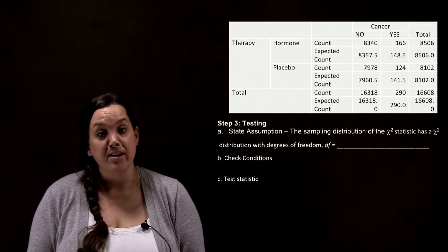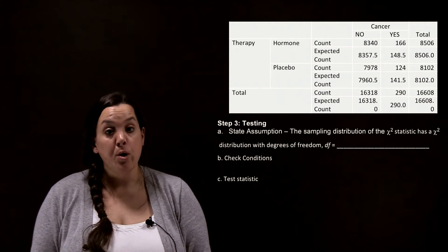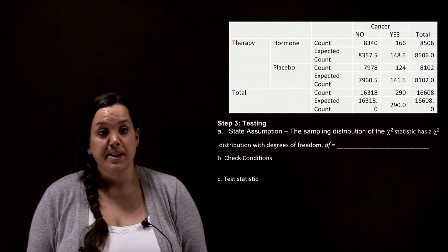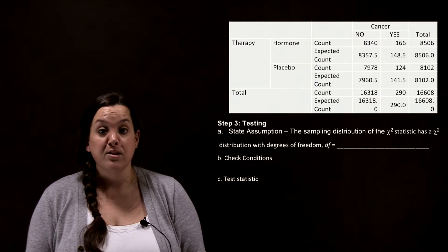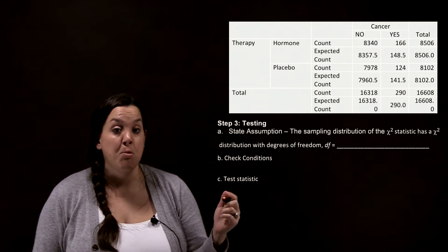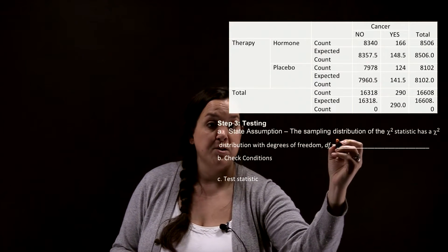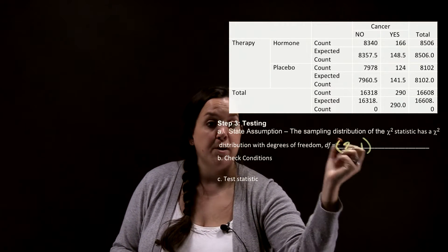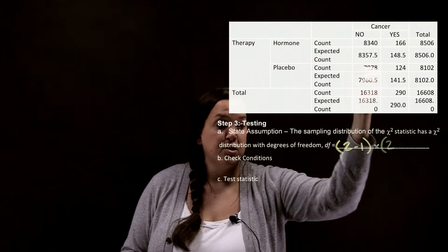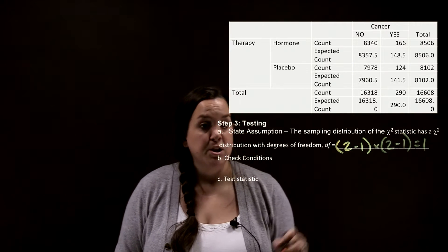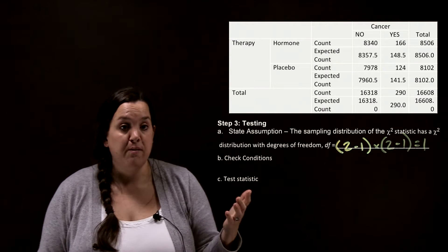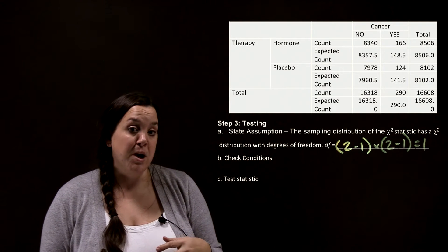Looking at step three, whenever you start a testing step you first have to state your assumption. When doing a hypothesis test on a contingency table, our assumption is that the sampling distribution of the chi-square statistic has a chi-square distribution with degrees of freedom equal to the number of rows minus one times the number of columns minus one. Here we have two rows — hormone versus placebo — times two columns minus one — yes or no cancer — so for a two-by-two contingency table you will always have one degree of freedom.